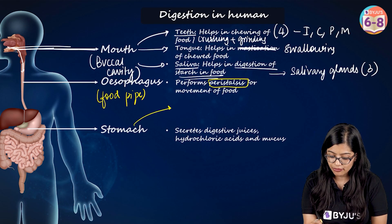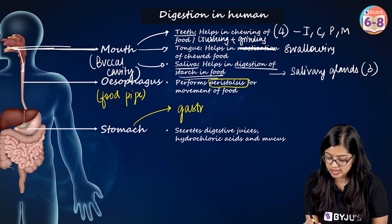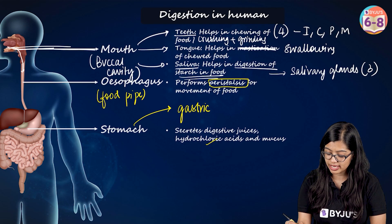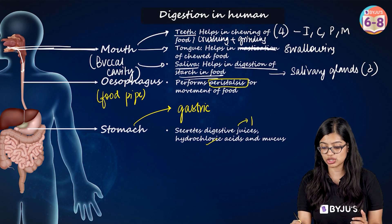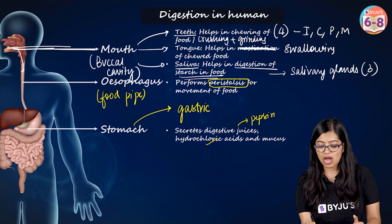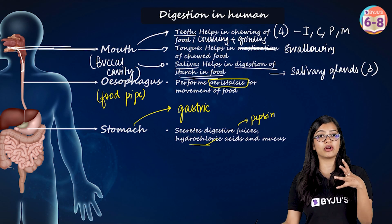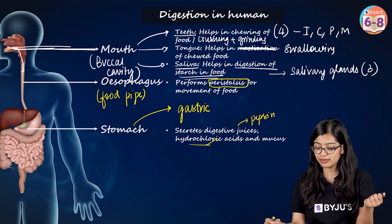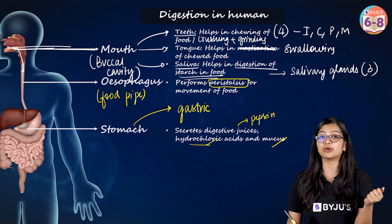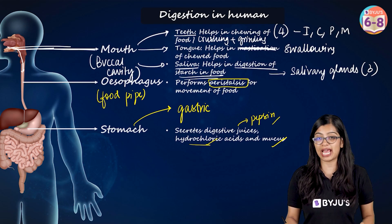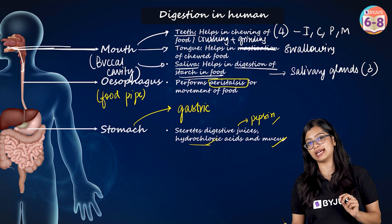The stomach produces gastric juices which include hydrochloric acid, digestive enzymes such as pepsin, and mucus. Hydrochloric acid gets rid of unwanted particles that enter with the food, mucus protects the inner lining of the stomach, and pepsin helps with protein digestion.